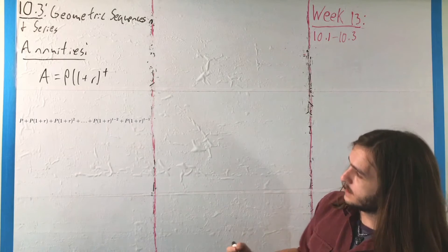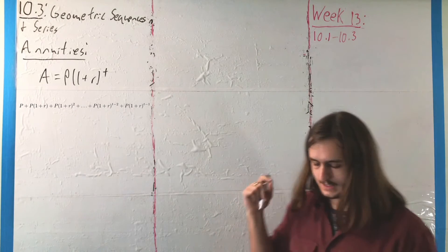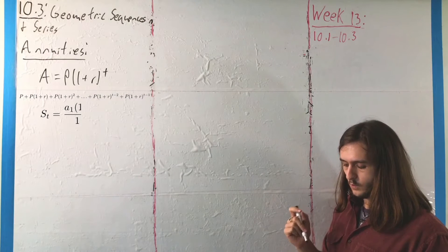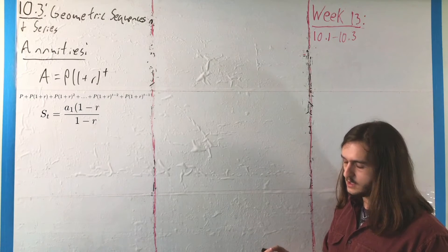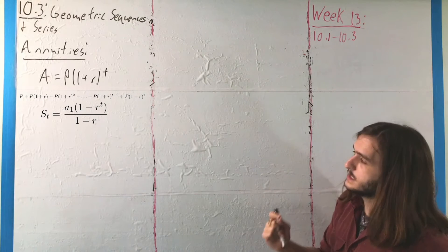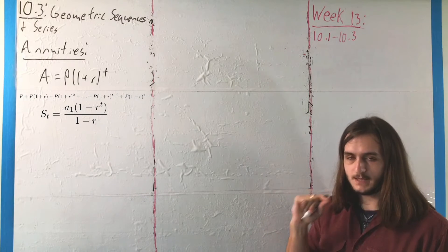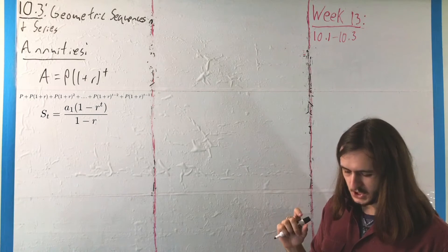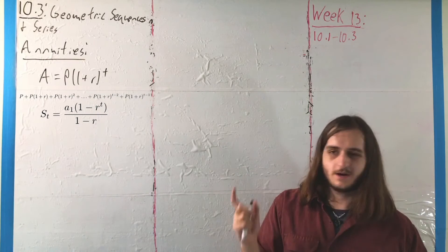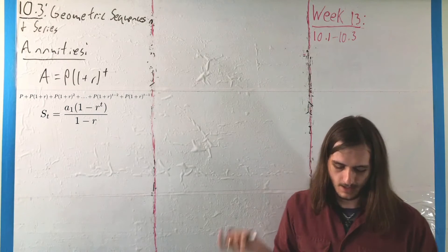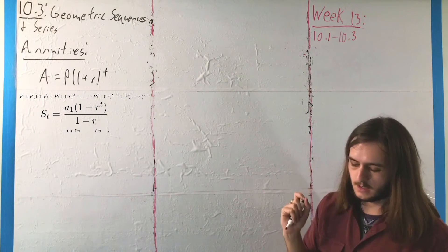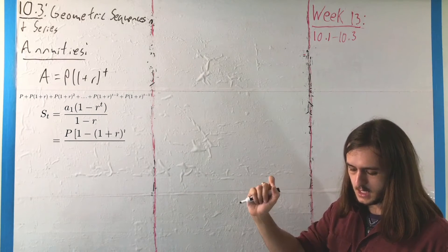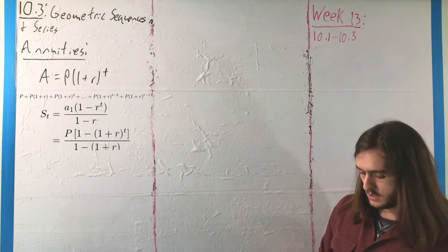But what we can take that into account and write that as S sub T is going to be equal to A1 times 1 minus R raised to the power T over 1 minus 1 plus R, where in this case, we said that value A1 is P, and R in this case, it's a bad notation, unfortunately, R is equal to 1 plus R. Sorry about that, but it does happen sometimes, but we get P times 1 minus the quantity 1 plus R raised to the power T over 1 minus 1 plus R.